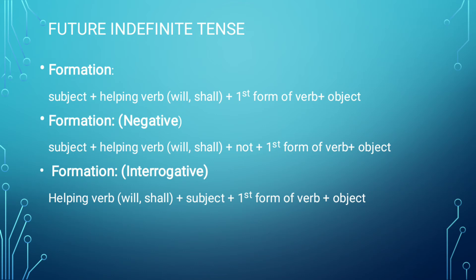First form of verb, and then object. Next: Formation. Negative sentence: Subject plus helping verb — will or shall — plus not, then first form of verb, and then object. Helping verb ke saath kya laga dena hai? Not laga dena hai. Then first form of verb. And then last par, object.